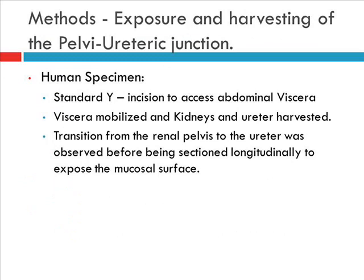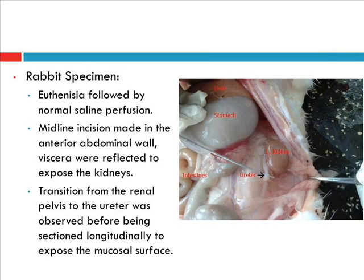For the human specimen, a standard incision was done for the normal autopsy, the viscera mobilized, and the transition from the renal pelvis to the ureter was observed before the kidney was sectioned longitudinally, because I was examining from the gross aspects up to the microscopic aspects. A similar procedure was done for the rabbits, where the rabbits were first euthanized and perfused with formalin before the dissection was done to expose the kidneys and the collecting system.